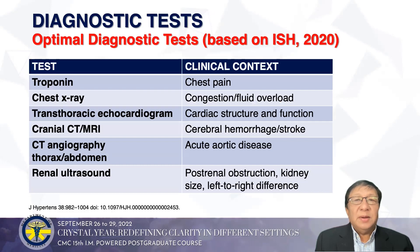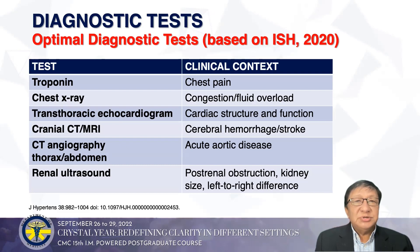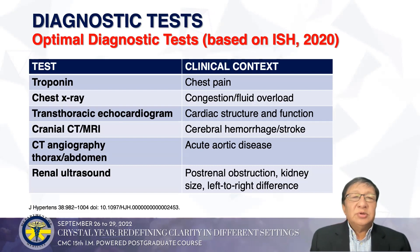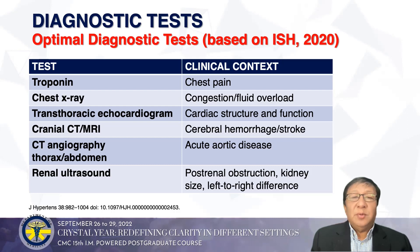As recommended by ISH 2020, optimal diagnostic tests depend on clinical context. If there is chest pain, order a troponin. If there's evidence of fluid overload and congestion, a chest X-ray is needed. For cardiac structure and function, transthoracic echocardiogram is called for. For cerebral hemorrhage and stroke, cranial CT or MRI. For acute aortic disease, immediate CT and CT angiography of the thorax and abdomen. For suspected renal obstruction, renal ultrasound.